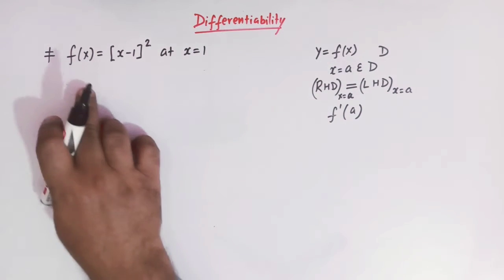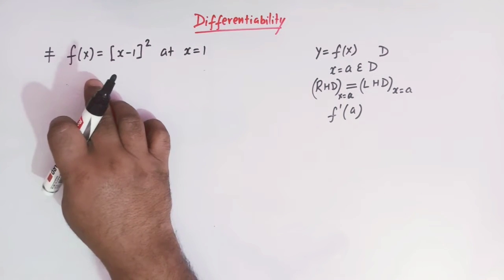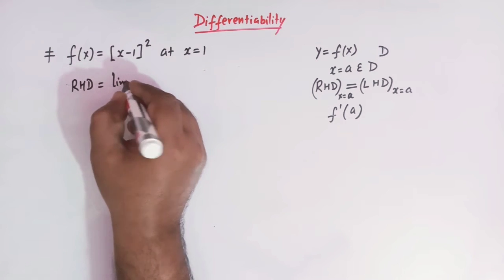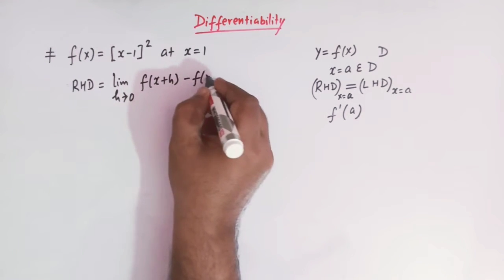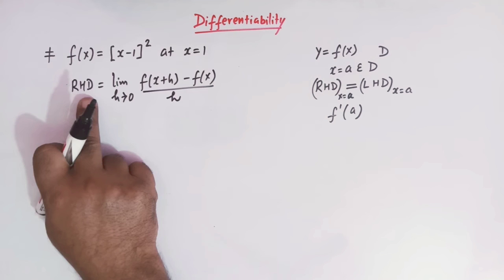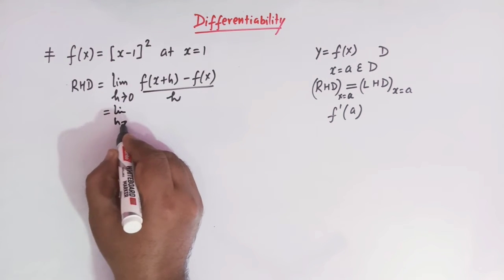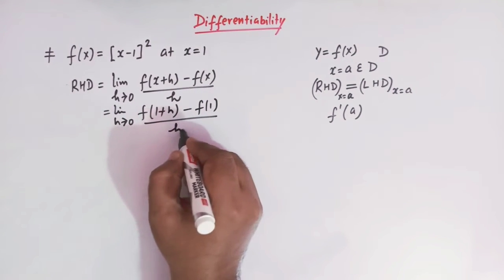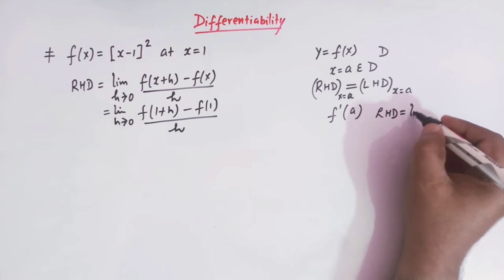Using this concept, we will see whether the derivative of this function at x = 1 exists or not. The right hand derivative is defined by the limit: limit h tends to 0 of [f(x+h) - f(x)] / h. Here x = 1, so we write: limit h tends to 0 of [f(1+h) - f(1)] / h.